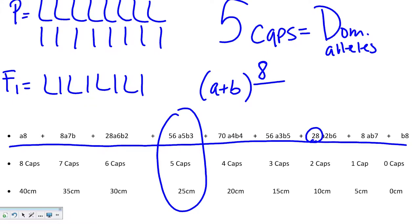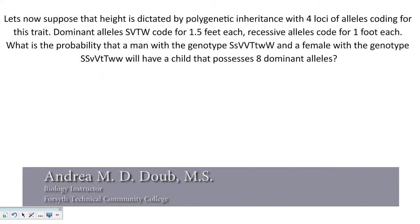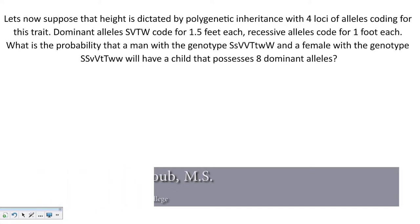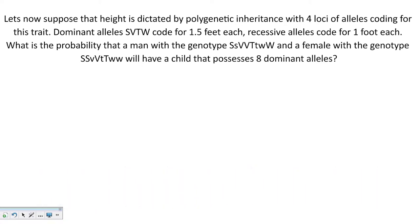I've got one more problem for you to try, and it deals with height. We're going to suppose that height is dictated by polygenic inheritance, once again four alleles that code for the trait. When we talk about height, you really have to ignore the fact that there are environmental factors that affect height as well as genetics, things like malnutrition and illnesses.